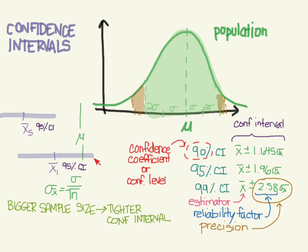So technically, it's not a probability, this 95%. It's your confidence. That's why we call it a confidence coefficient. We never say it's the probability that we know the population mean. It's a confidence.